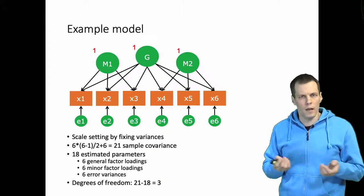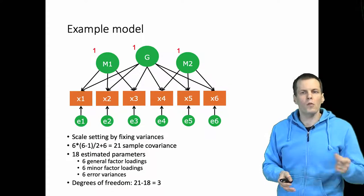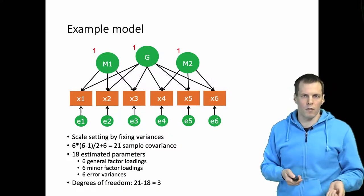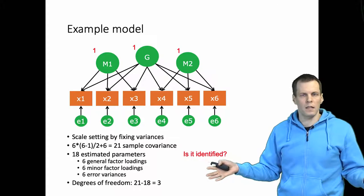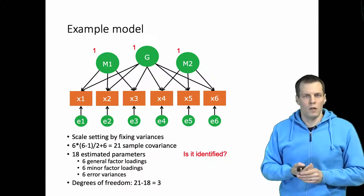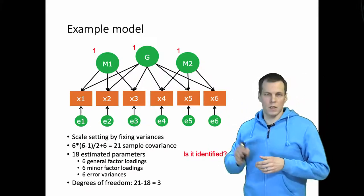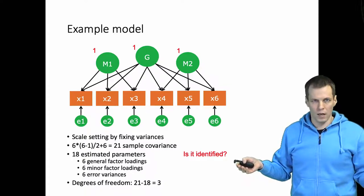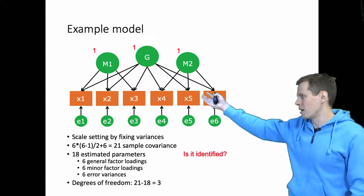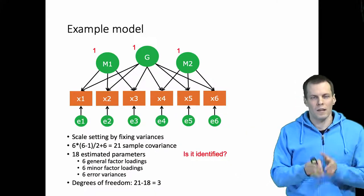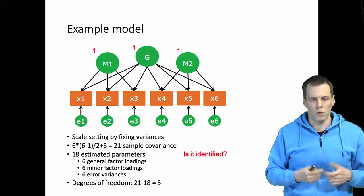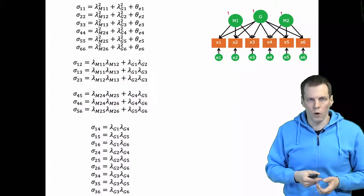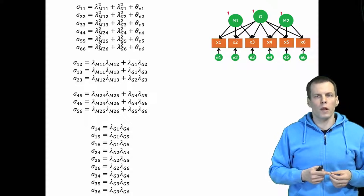We ask: is this identified? For identification, we know that latent variables must have scales, which we do. The three-indicator factor rule doesn't apply directly to the bifactor model — it applies to indicators that load on only one factor. To determine identification, we must work through the covariances. Looking at all model-implied covariances, there are three groups: variances for indicators, covariances within one minor factor, and covariances between minor factors. We don't need the variance equations to solve the factor loadings, as those only help solve the error variances.